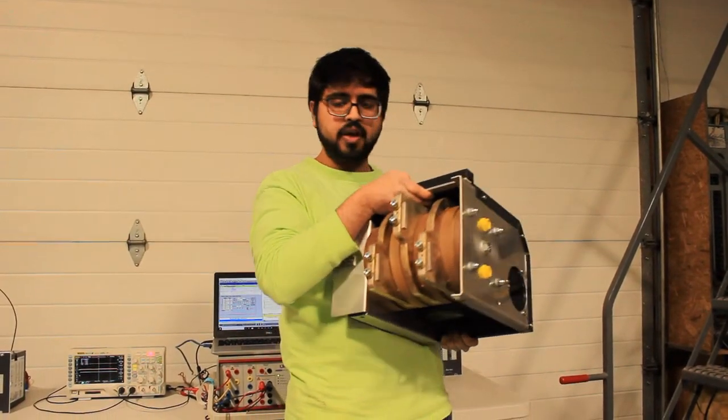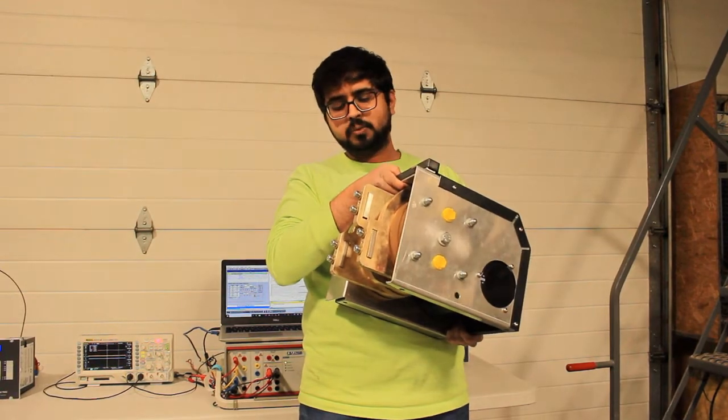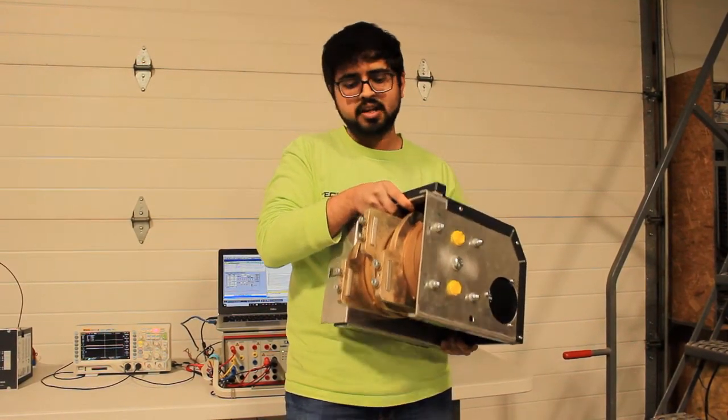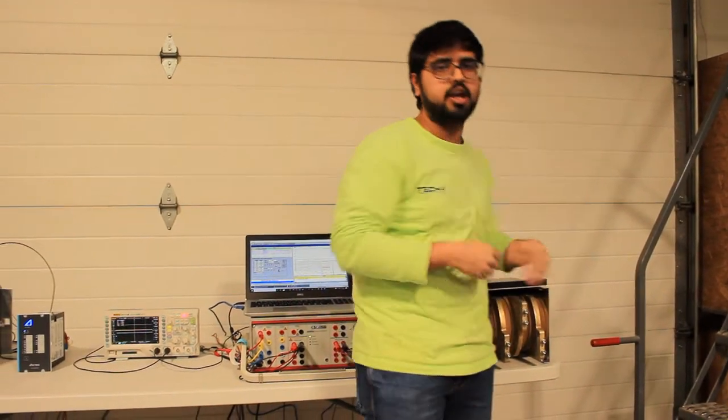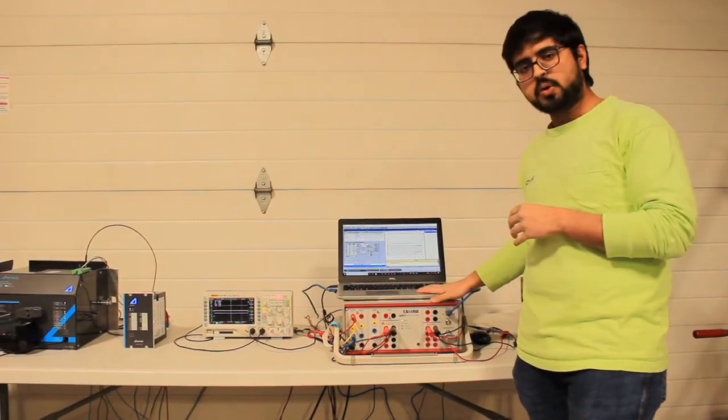Let me show you the back of the quencher. This is how it's mounted on the bus bars, the three phases. In this setup right here, to demonstrate an actual collapsing of the voltage, we have induced voltage on one of the phases. When the quencher trips we can see the voltage collapsing and measure the time on the oscilloscope.